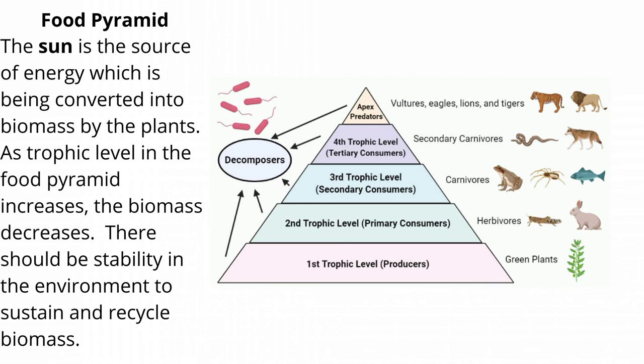In the food pyramid, the producers such as plants form the first trophic level, to plant eaters at the second trophic level, to animal eaters at the third trophic level or succeeding levels. The pyramid usually ends with the apex consumer.